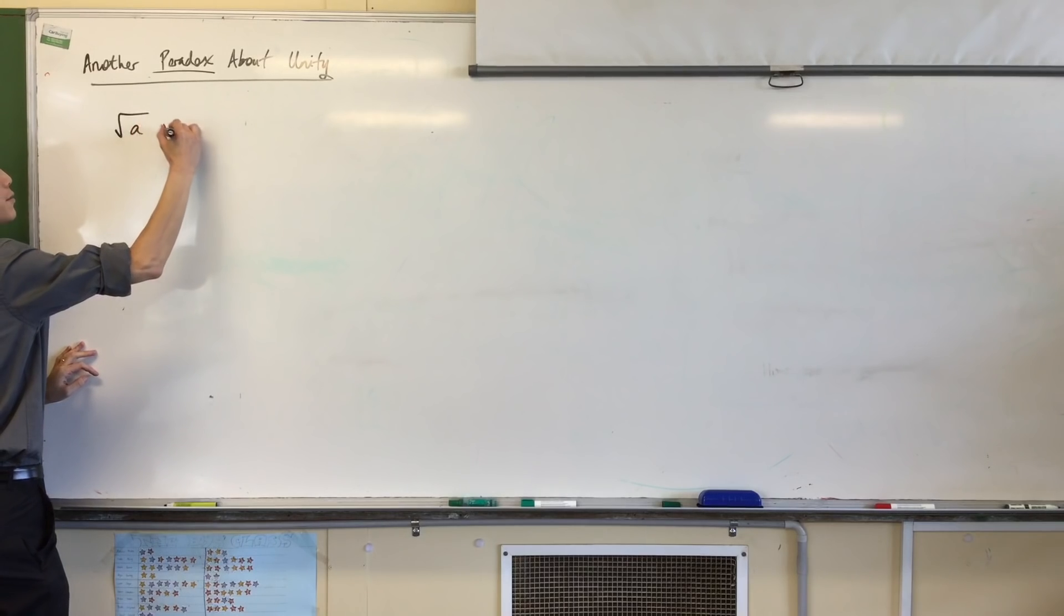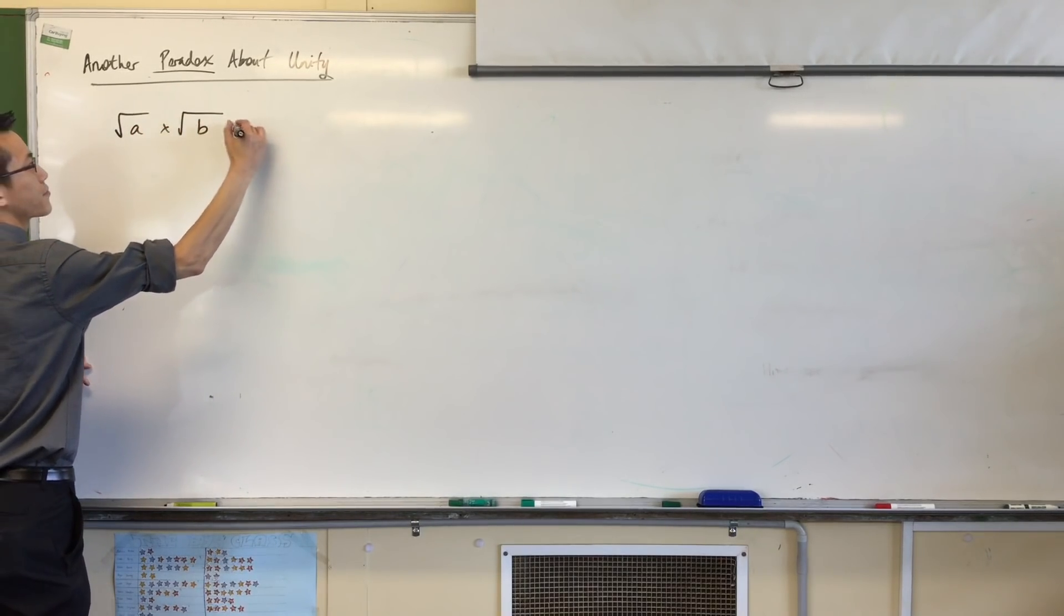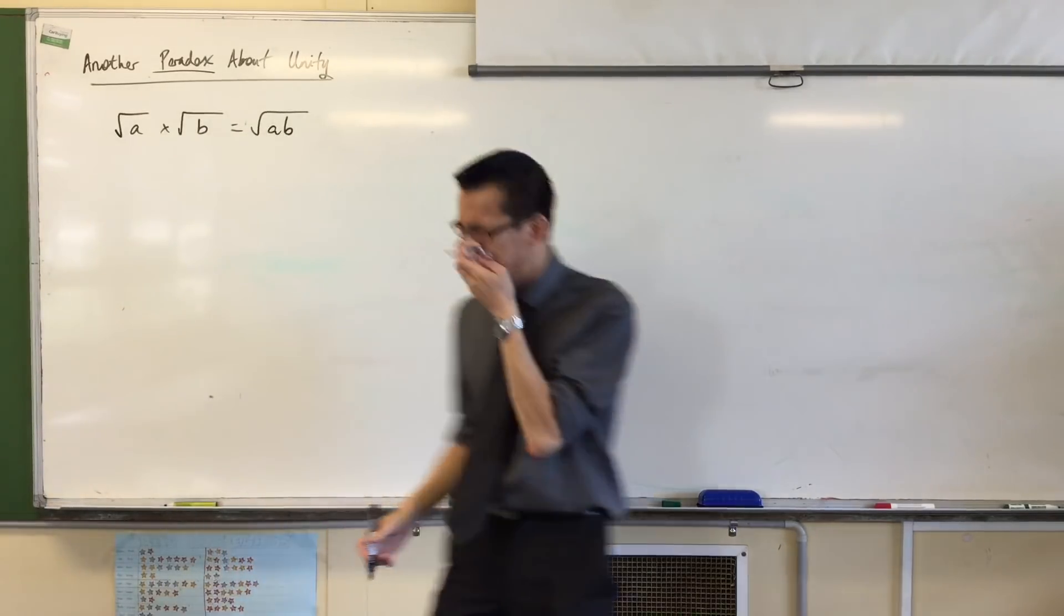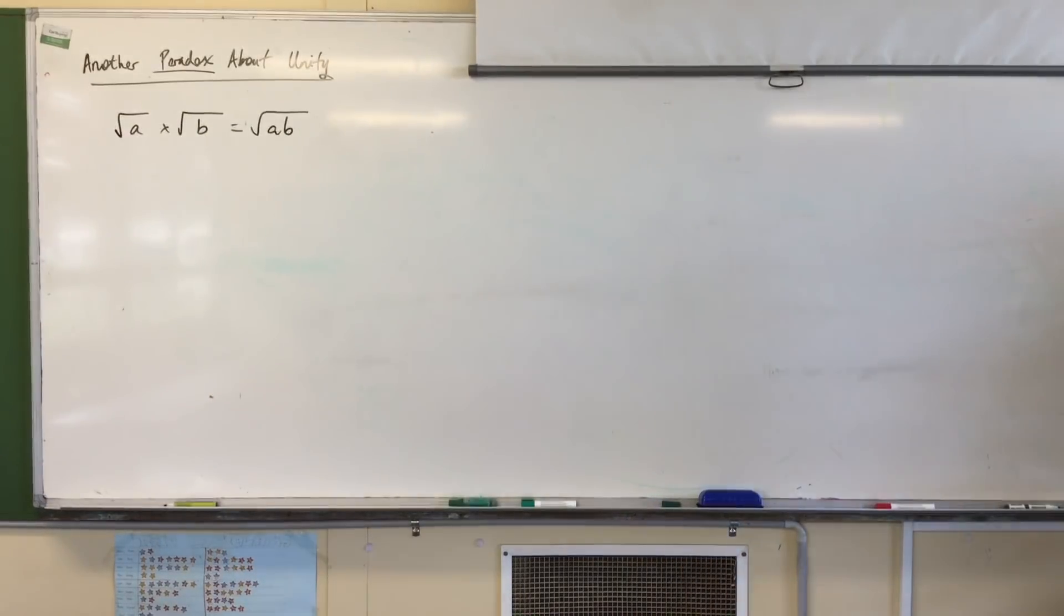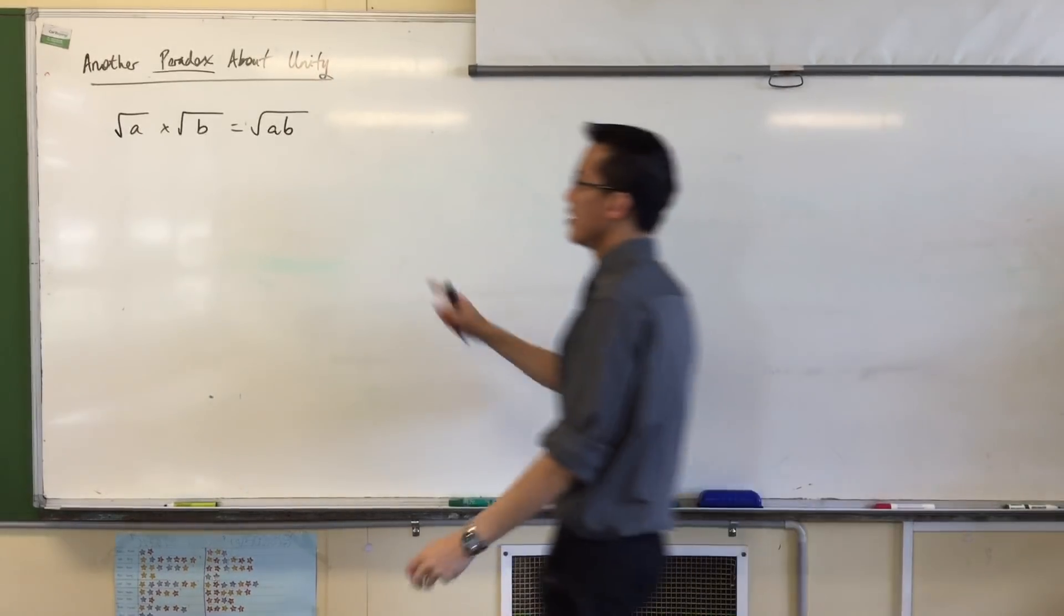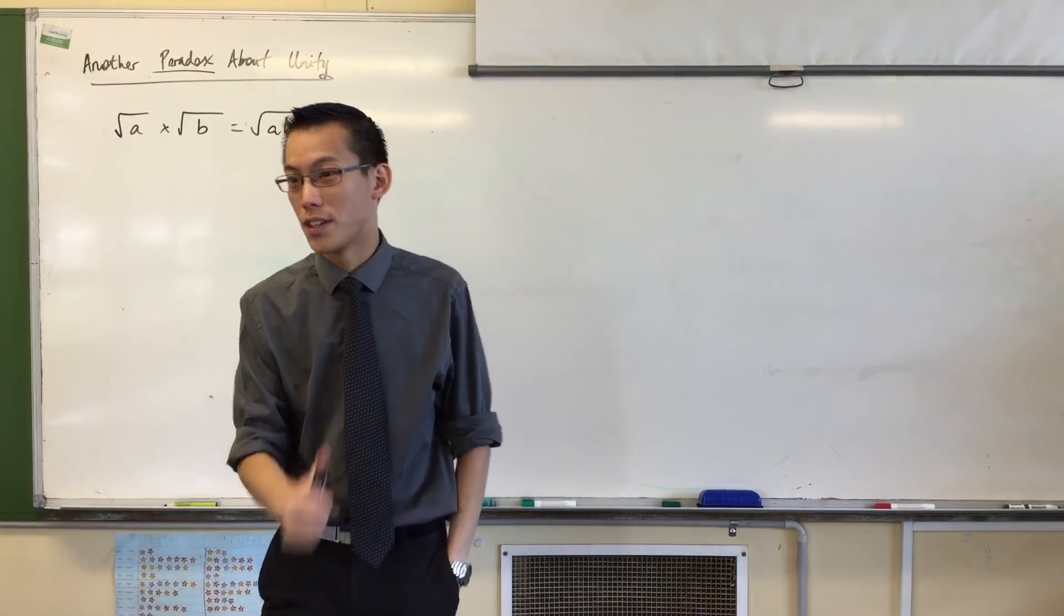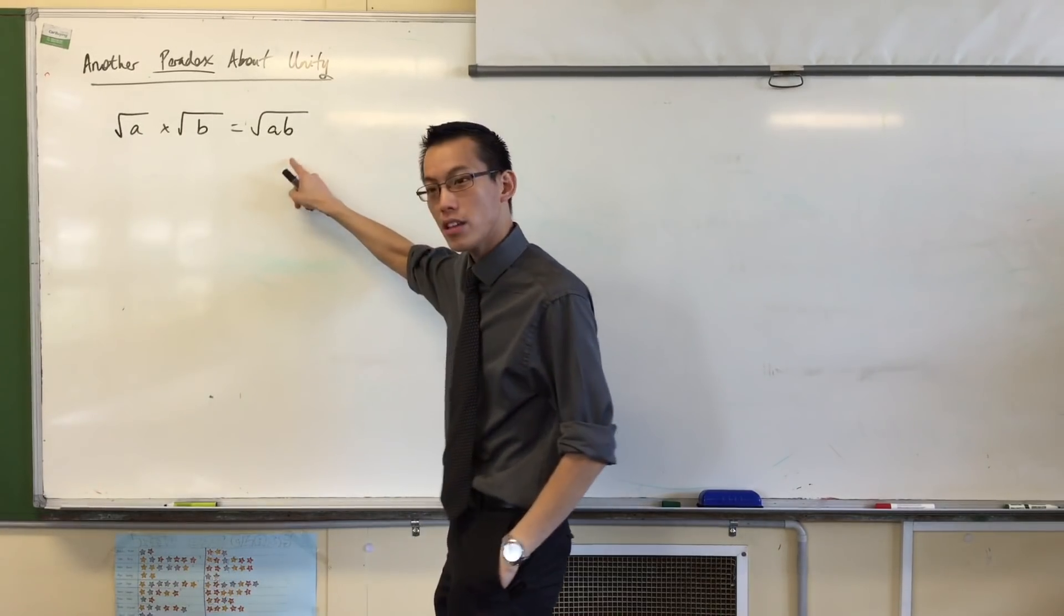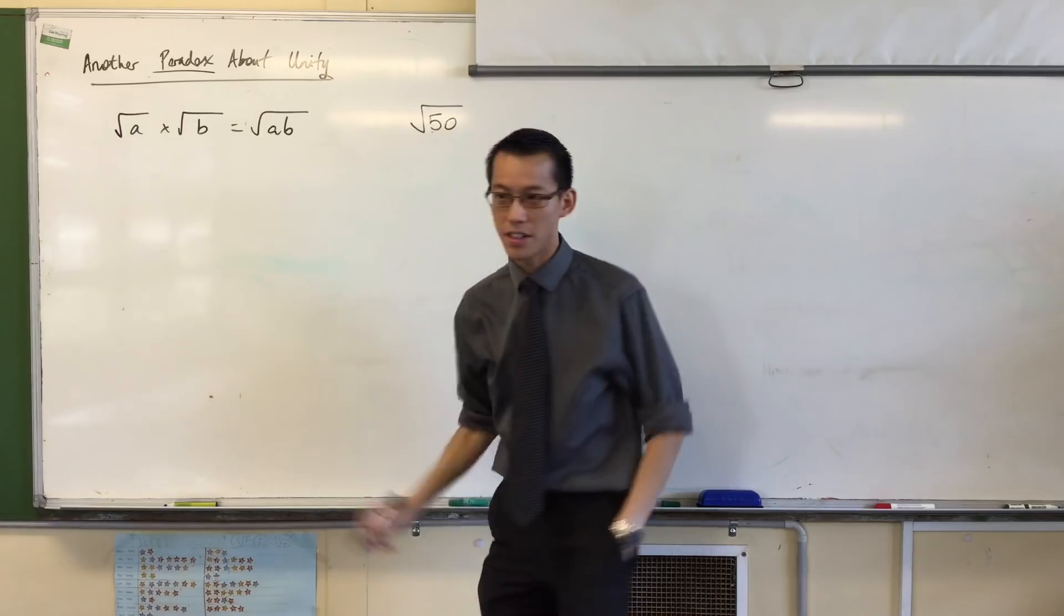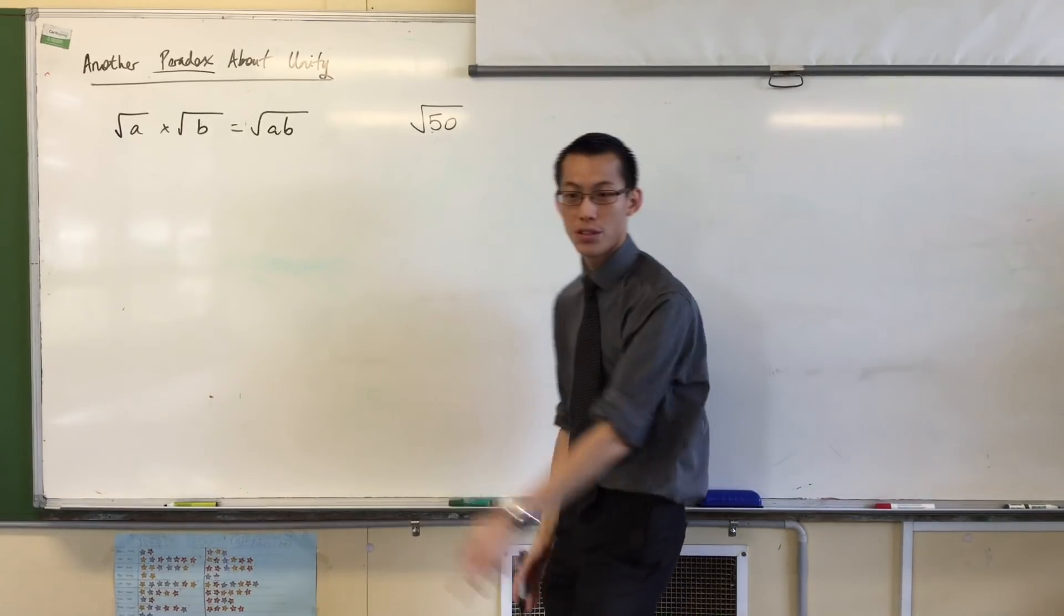I'm going to say this: √a × √b = √ab. Now this is one of the first surd laws that you learn, one of the very first ones. In fact, it's the way that you simplify. If I gave you something like √50, you can simplify this, right? What would you do to simplify that?